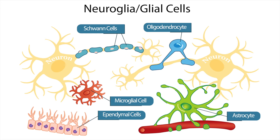Astrocytes link neurons to the blood supply. Neurons are cells that need access to blood in order to access nutrients as well as release their waste.